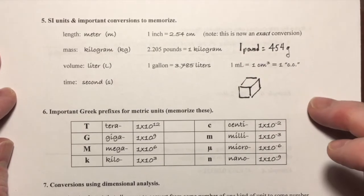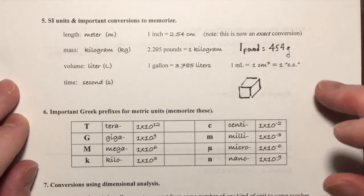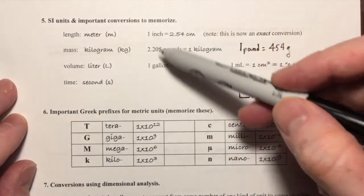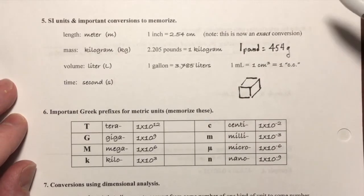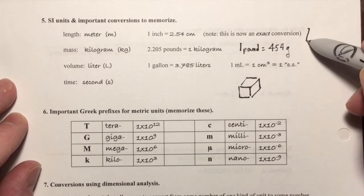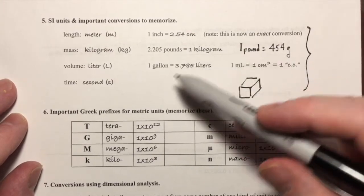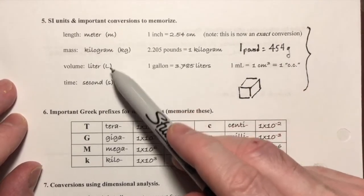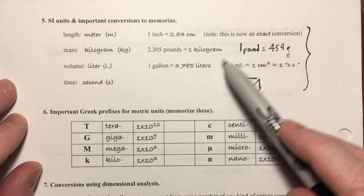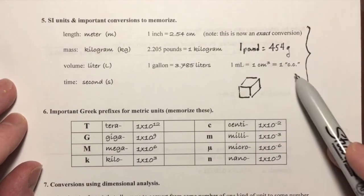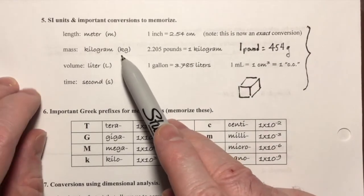Okay, those are the basic SI units you need to memorize. Everything that's here you need to memorize. This will not be provided for you on quizzes. You need to know the base units, the conversions to imperial—you need to know that equivalence there.